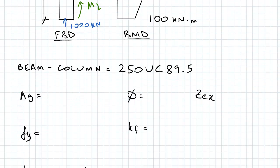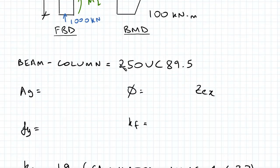So the beam to column I've mentioned here is a 250UC89.5. So it's a universal column. I've used universal beams in most of my examples, so I'm just switching it up with a UC.